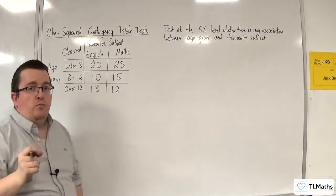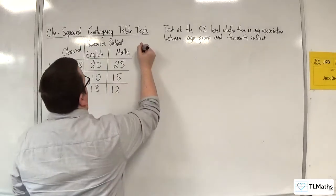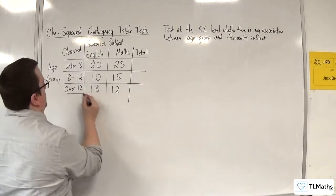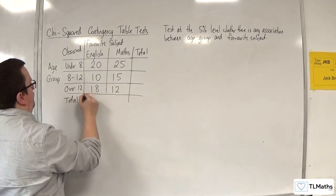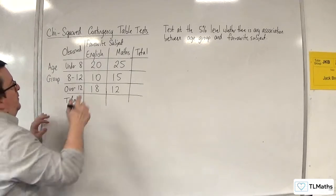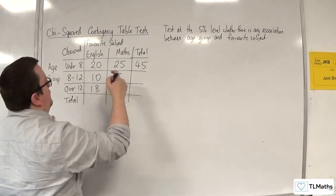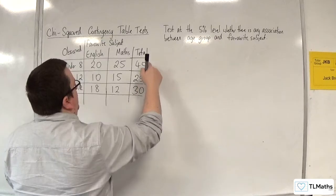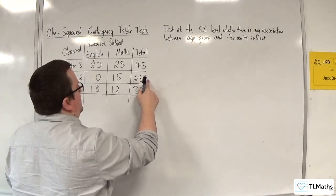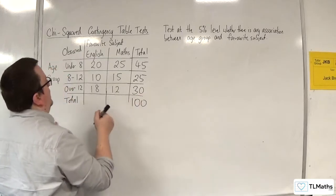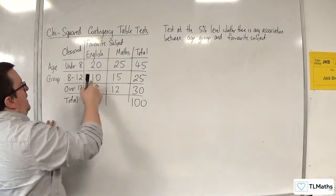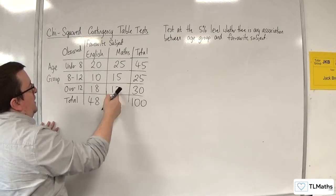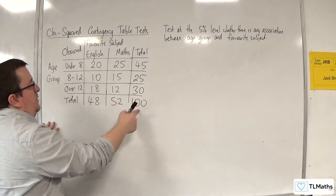Good practice is to find the total column and the total row, so let's add that to the table. We've got 20 and 25, so 45; 10 and 15 is 25; 18 and 12 is 30. So 45 and 25 is 70, plus 30 is 100. Then 20 plus 10 plus 18 is 48; 25 plus 15 plus 12 is 52; and 48 plus 52 is 100.